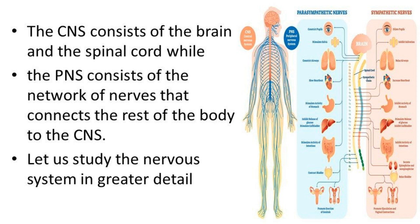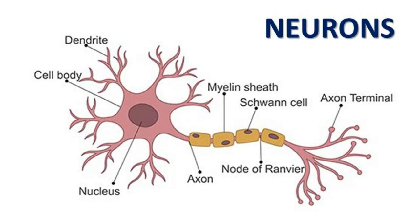The PNS consists of the network of nerves that connect the rest of the body to the CNS — the rest of the body meaning the hands, nose, and legs. This is called the peripheral nervous system. Let us now study the nervous system in greater detail, looking at the neuron structure.